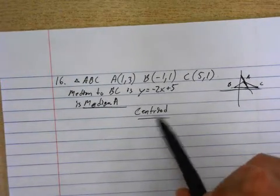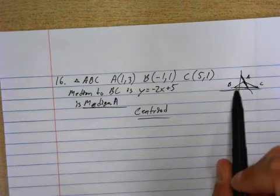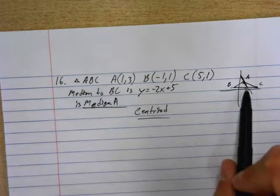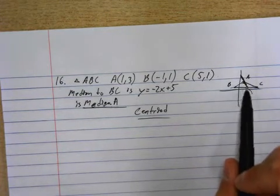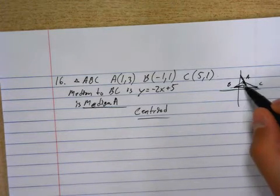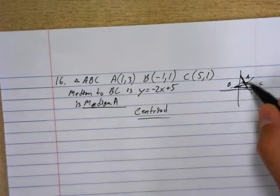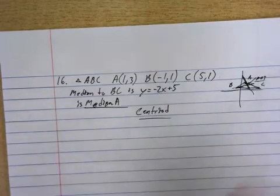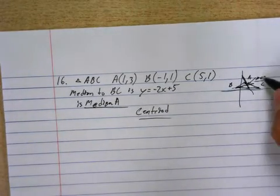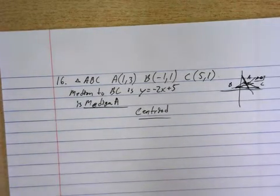You take from the vertex to the opposite midpoint, and then you find the equation of the line, and then you look for another one. Like I could do this, and I find that POI, and that POI is the centroid. But we're not doing that anymore.